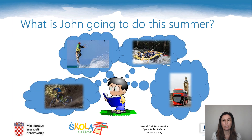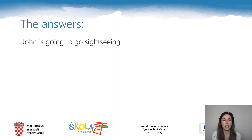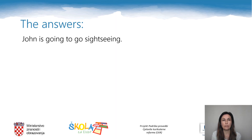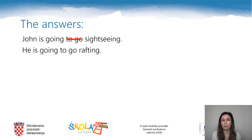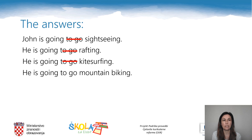Now have a look at this picture and answer the same question about John: What is he going to do this summer? Your task is to say four sentences about John's plans using going to future. Here are the answers. John is going to go sightseeing — but when there is a verb 'to go', you can omit it. So instead of 'John is going to go sightseeing', say 'John is going sightseeing'. Instead of 'he is going to go rafting', say 'he is going rafting'. Instead of 'he is going to go kitesurfing', say 'he is going kitesurfing'. Instead of 'he is going to go mountain biking', just say 'he is going mountain biking'.